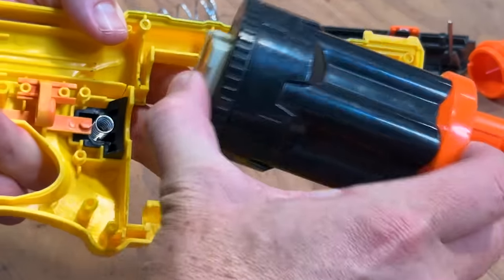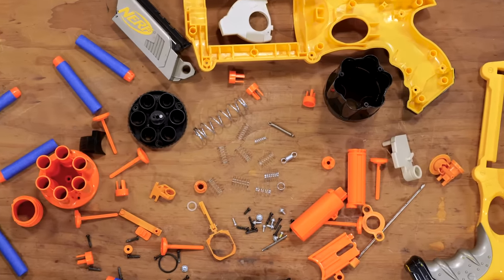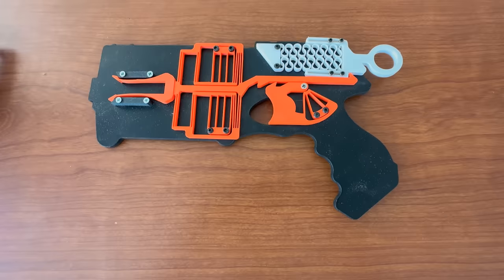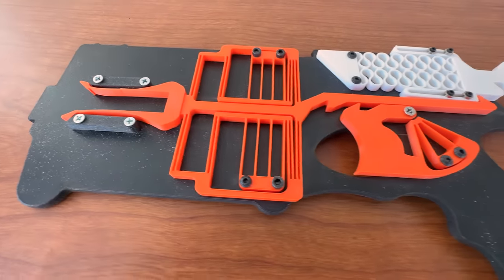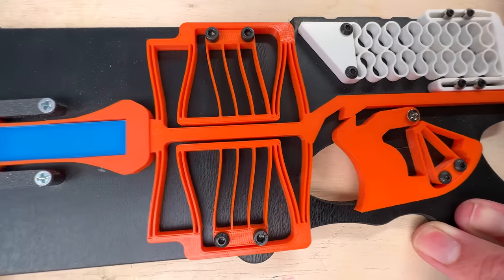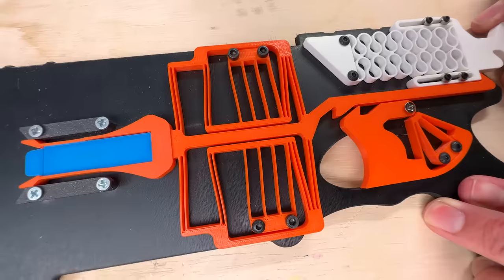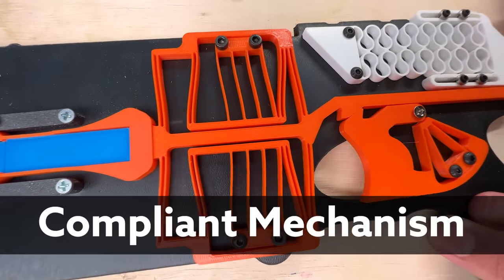But what should that look like? For example, how do you even store energy to fire a dart with no mechanical springs? Well, here was the first prototype. And while it's still more than one part, you can see the clever way the springs were replaced with a few new parts that stored energy by being flexible. In engineering, we call that a compliant mechanism. And I happen to know the world's foremost expert in that field.